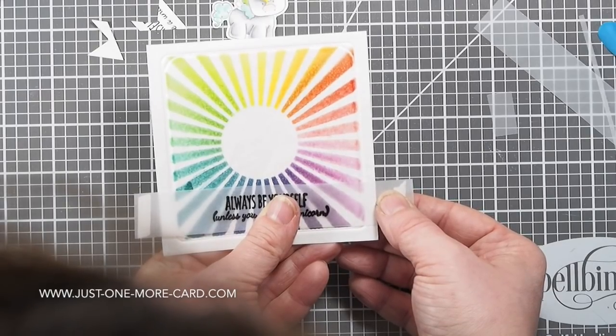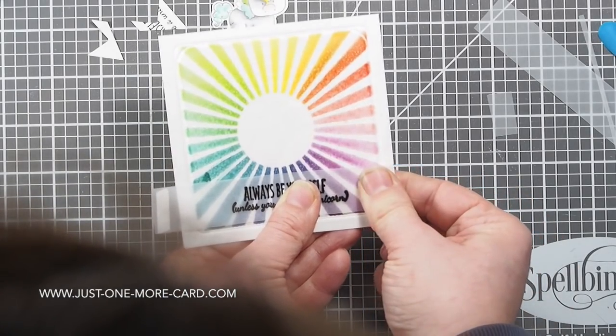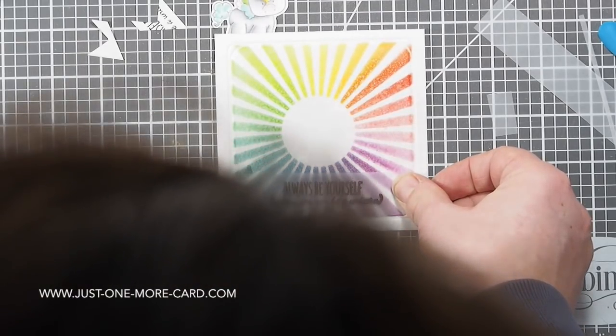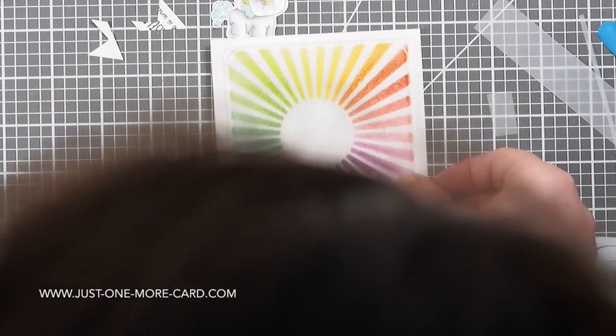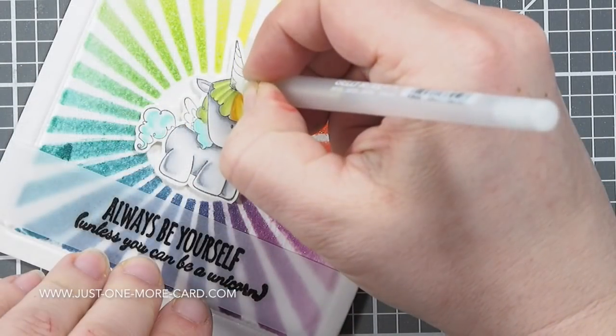I put some double-sided adhesive tape on each end of this strip and then I'm just wrapping it around the front of the card base. I don't mind that it's visible on the inside. It's a handmade card and I feel it's totally okay if sometimes you can see how it was created.